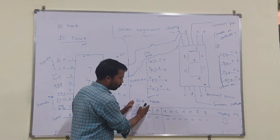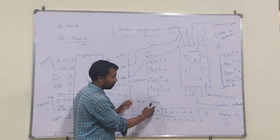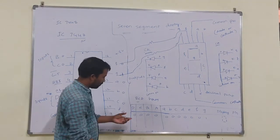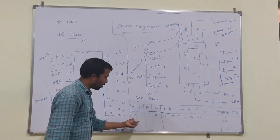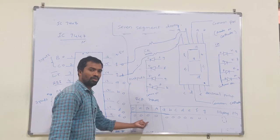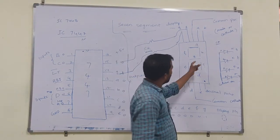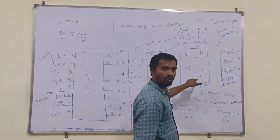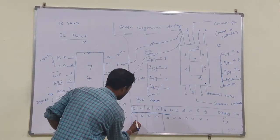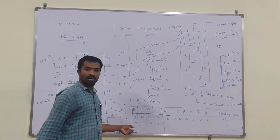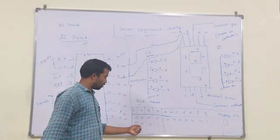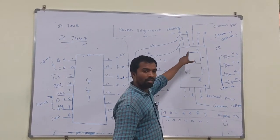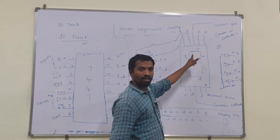By varying the inputs, we have to observe the outputs on the seven segment display. When all inputs are zero (0000), the output displayed on the seven segment display is zero. Next, when the input is 0001, the binary equivalent of 0001 is one, so the number one is displayed on the seven segment display.